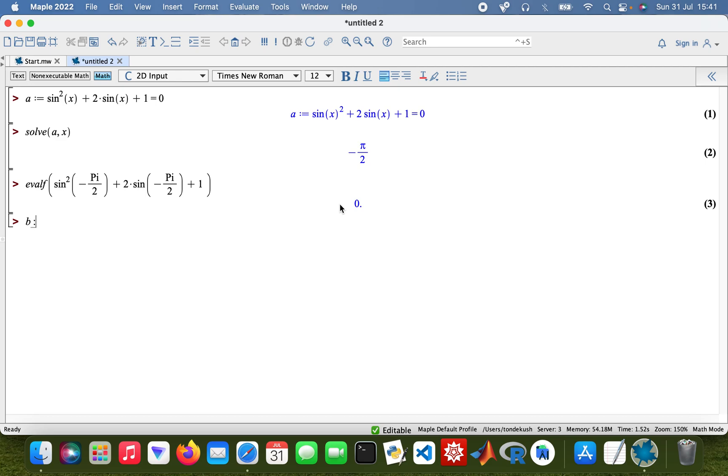And then I'll do another one. That would be 2sin²(x) + 5sin(x) - 3 = 0. Then solve, solve b for x. Okay, and then do the same thing as well.